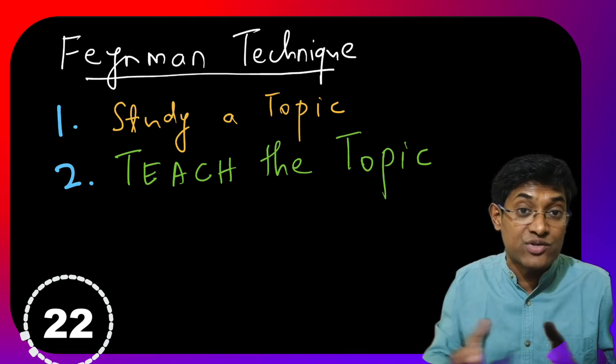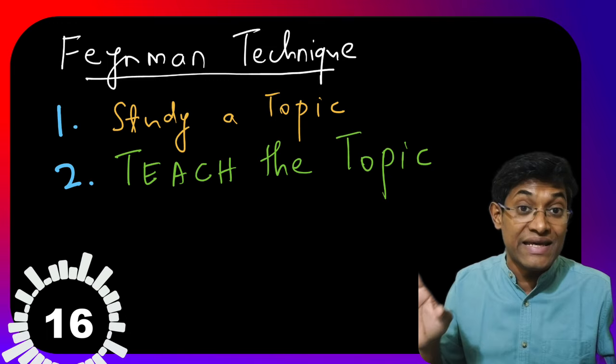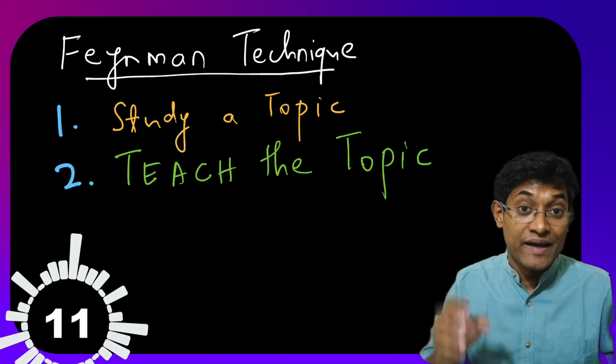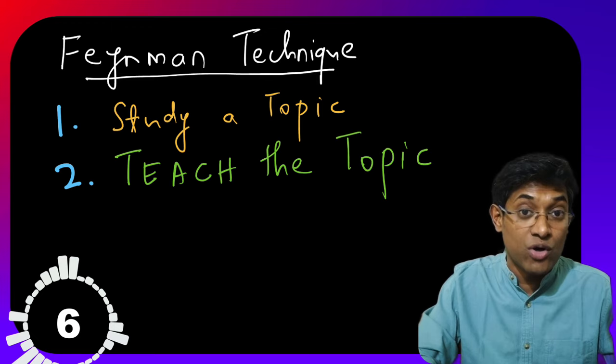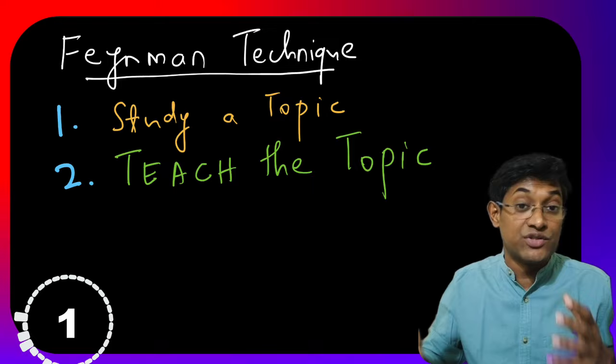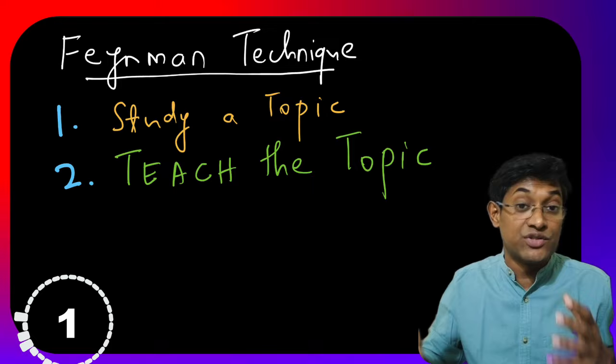Once you're done studying the topic, go ahead and try to teach that topic to another person. If you're like most people and if you don't have somebody handy to teach the topic to, then what you can do is take a piece of paper and try to imagine that you're teaching the topic to somebody else and write down concepts on that paper as well as speak out loud while you're trying to teach the topic. So I've learned the Josephus or the winner of the circle game problem. Now step number two is to enact teaching it to someone.